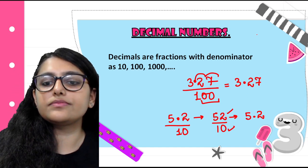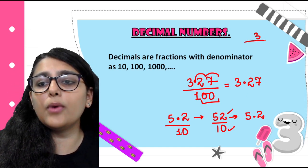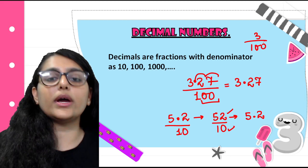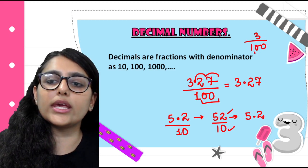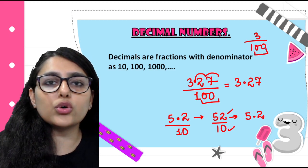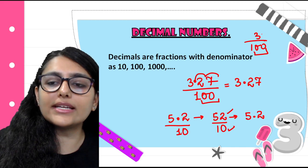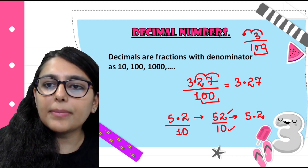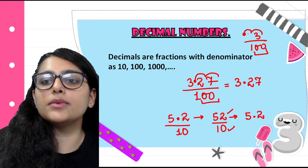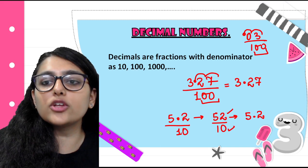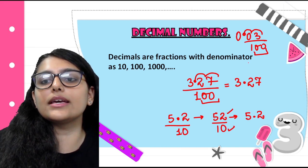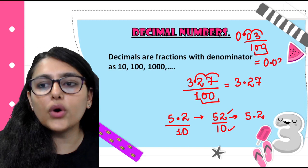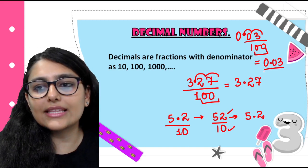Similarly, I have 3 upon 100. How do I write 3 upon 100 in decimal form? Count how many zeros there are, skip that many places from the right-hand side: 1, 2 — and here comes my decimal. Since there's nothing there, I put 0, and one more 0 before it. So this becomes 0.03.